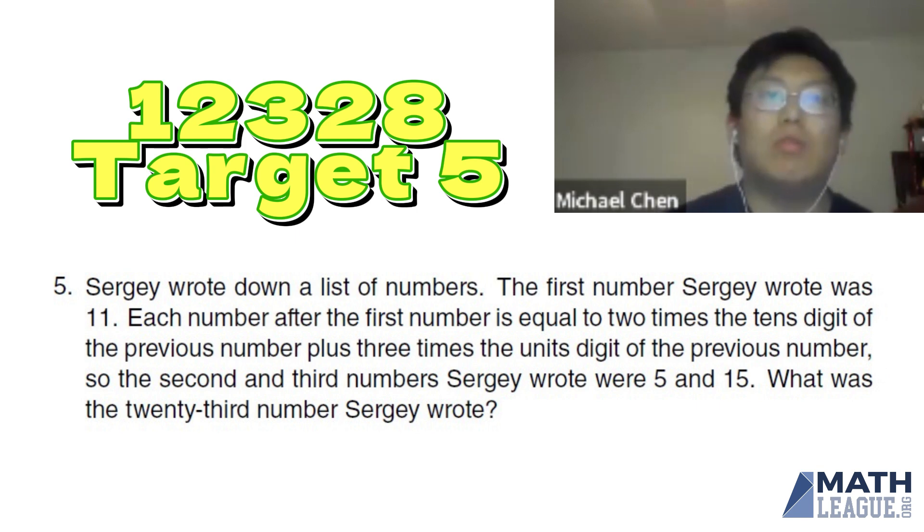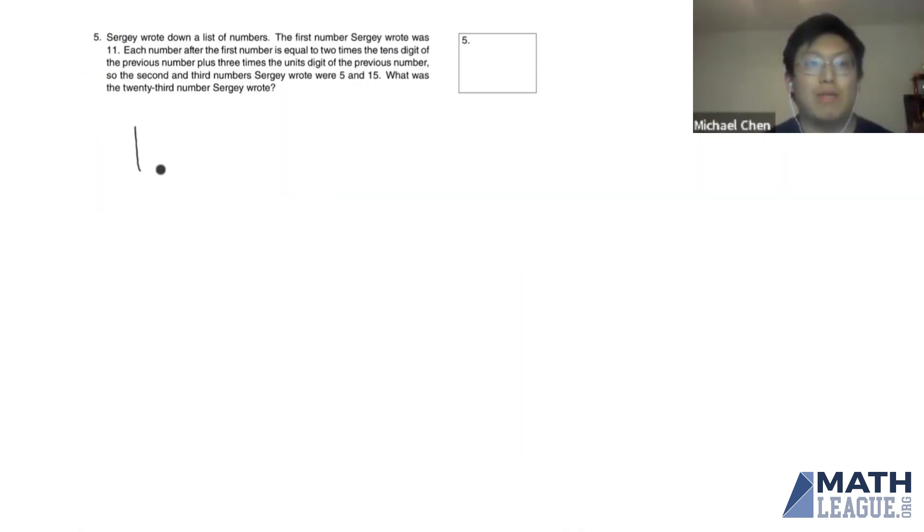So the second and third numbers Sergey writes are 5 and 15. What's the 23rd number that Sergey wrote? So now, we take the list, we start at 11.